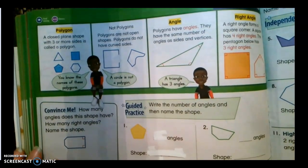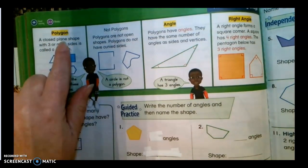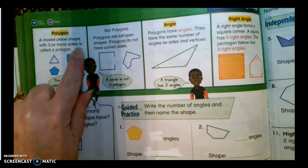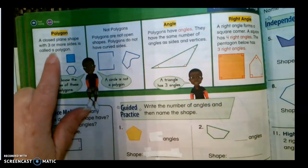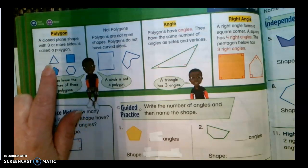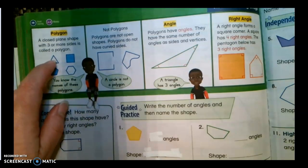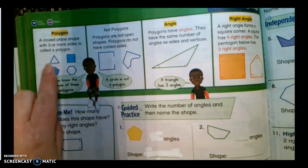Let's look at our vocabulary. So a polygon, we just said, is a closed plane shape with three or more sides and it is a polygon. So we can see these shapes here. We call these shapes closed because if we were to put something inside of this shape, it could not get out.